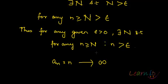Hence, a_n equals n tends to infinity as n tends to infinity. This is just one example of how we can talk about divergence.